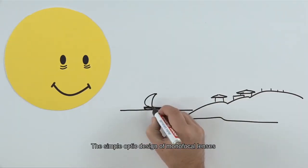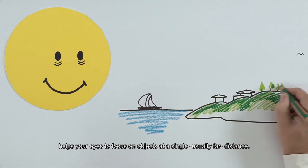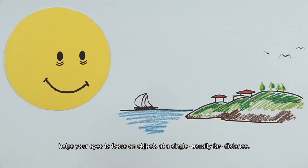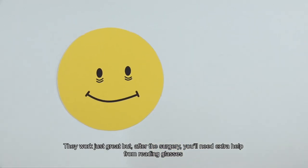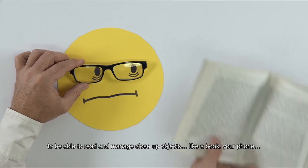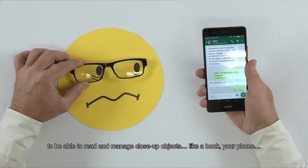The simple optic design of monofocal lenses helps your eyes to focus on objects at a single, usually far distance. They work just great, but after the surgery you'll need extra help from reading glasses to be able to read and manage close-up objects like a book, your phone, or the remote.